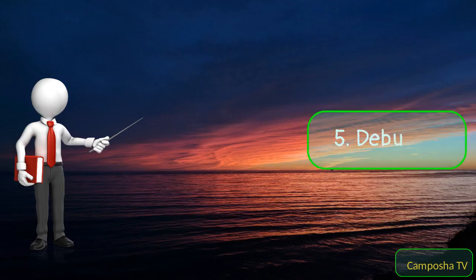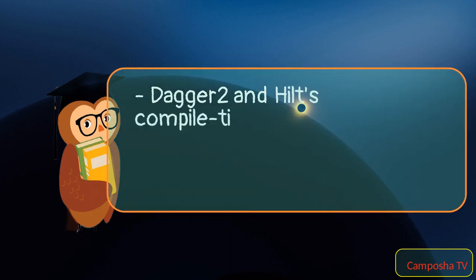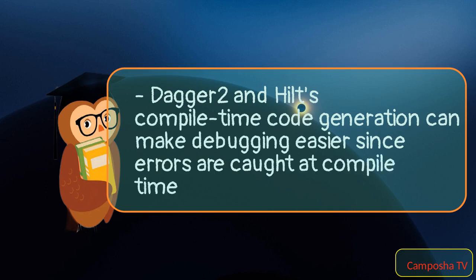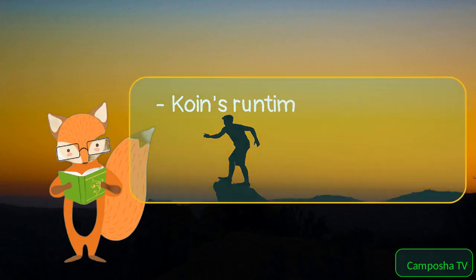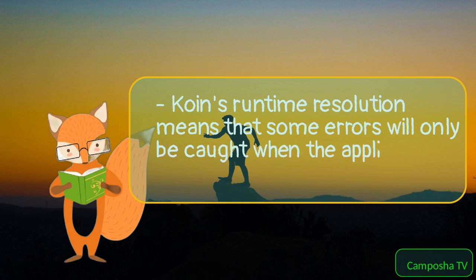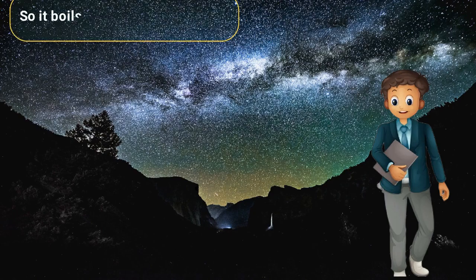Debugging: Dagger2 and Hilt's compile-time code generation can make debugging easier since errors are caught at compile time. Koin's runtime resolution means that some errors will only be caught when the application is running.